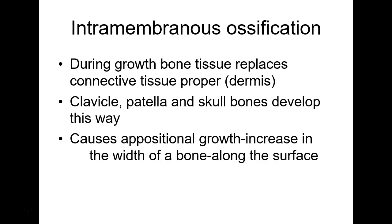Intramembranous ossification: during growth, bone tissue replaces the connective tissue proper, which would be the dermis. The clavicle and some of the skull bones develop this way. It causes appositional growth — that's in all three dimensions. It's not doing it from epiphyseal lines; that's a different kind of growth. Appositional growth increases the width of the bone along the surface.